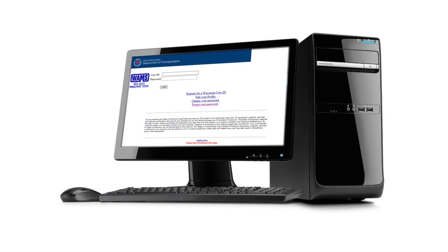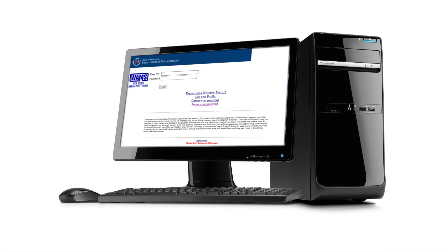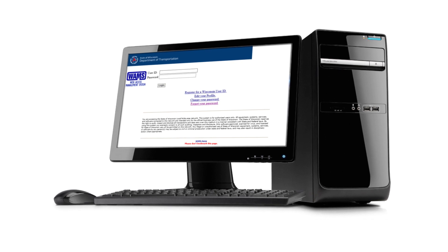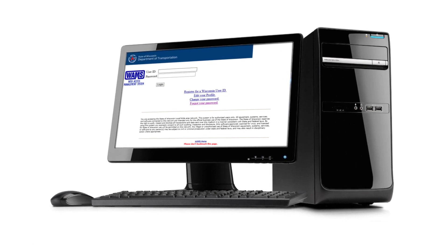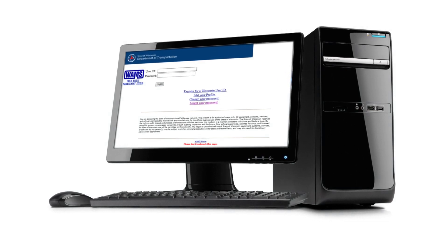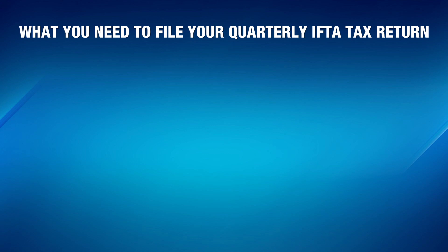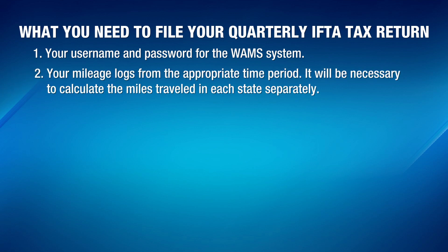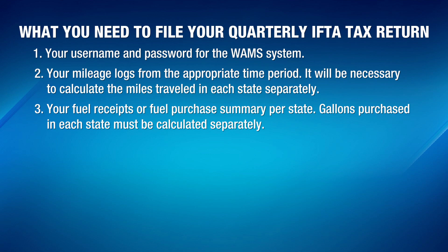Filing your IFTA tax return online is both quick and convenient. This video will walk you through the online filing process. To file your IFTA quarter you will need to have your Wisconsin Access Management System or WAMS username and password, mileage logs from the appropriate time period, fuel receipts or fuel purchase summary per state and records.